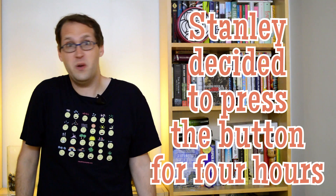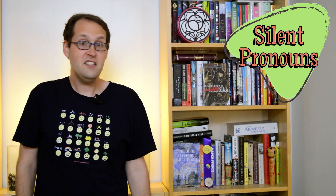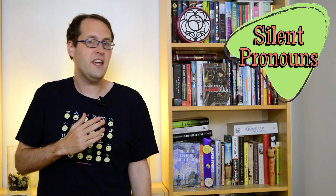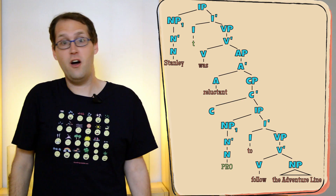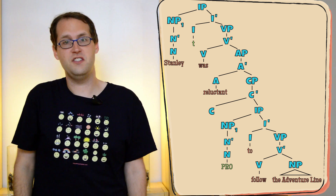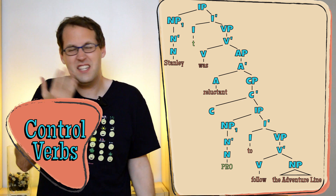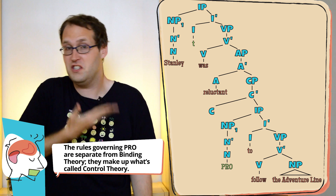So if Stanley's the one in control of his decisions in a sentence like "Stanley decided to press the button for four hours", and Stanley's also the one doing all the button pressing, how do we make sure that Stanley gets a theta role from both verbs without moving him around or breaking our existing rules? To get through the problem, we'll have to introduce something new to our syntactic theory: silent pronouns. We've already seen some silent constituents in our trees before, like the traces left behind after moving a word from one part of a sentence to another. Silent pronouns, which we'll call PRO, are a bit like traces — you can't hear them, but they have tangible effects on the sentences they show up in. So for a sentence like "Stanley was reluctant to follow the adventure line", its tree would end up with a PRO in the lower clause — like a silent reflexive pronoun that refers back to Stanley in much the same way that a word like "himself" does. Because certain verbs impose this kind of structure onto the sentence, where the subject controls the meaning of this silent pronoun, we call them control verbs.